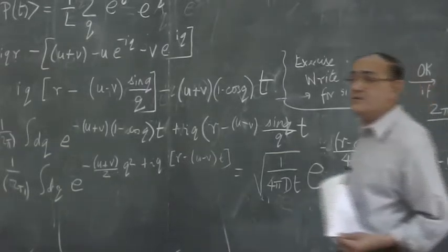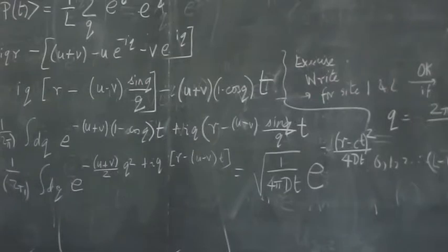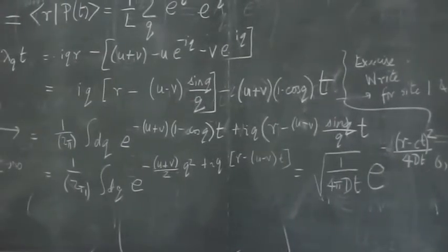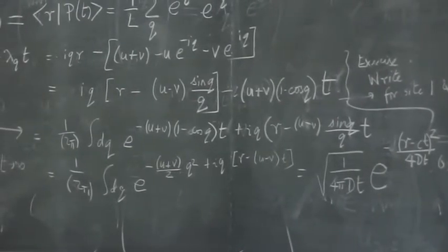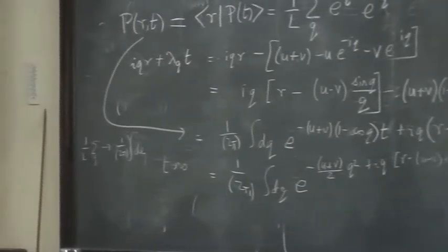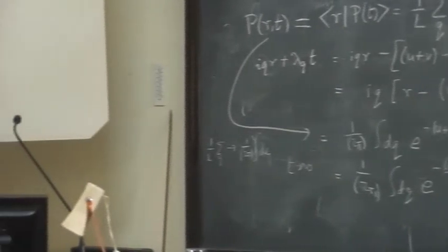So let us look at 1 over 2π integral dq e to the minus (u + v)... And here cos q is 1 minus q^2/2. So this will come to (u + v)/2 times q^2 times t. Sine q over q will go to 1. This will be left with simply plus iq times (r - (u - v)t).